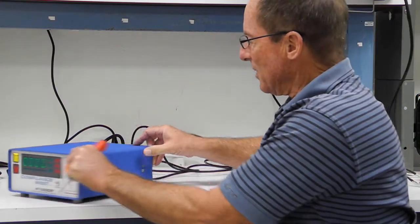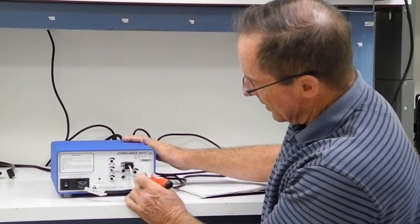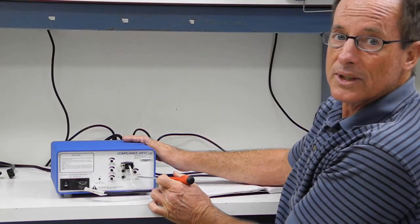That's all done on the back panel. You can see this one here, the middle one, is for test time. The bottom one is for leakage current, and over here is the voltage adjust.